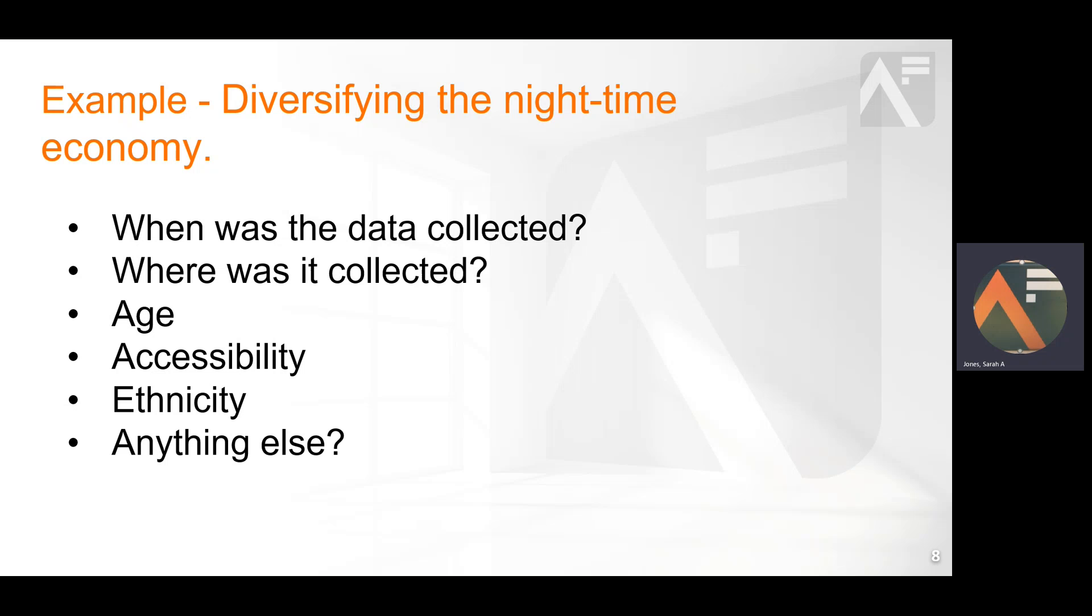For example, say you are working on a policy to diversify the night-time economy and encourage a wide range of people into the city centre in the evening. What would you look out for in the piece of evidence? Firstly, you want to look out for when was the evidence collected? You also might want to look at the sample to ensure it's representative of age groups, ethnicity, and accessibility, as the current city centre offering might have an impact on these characteristics.